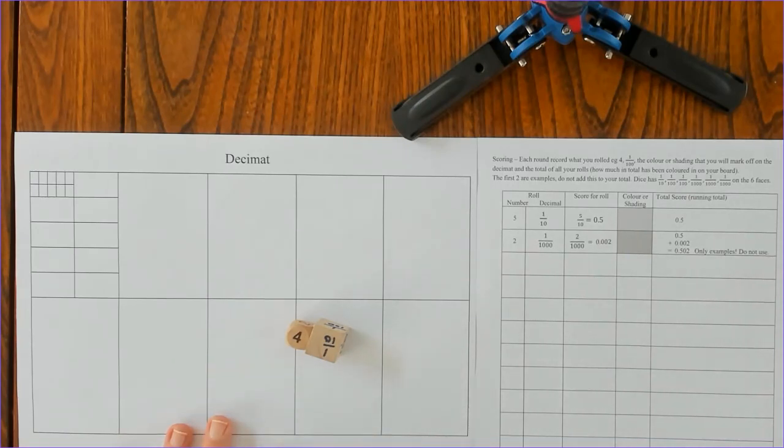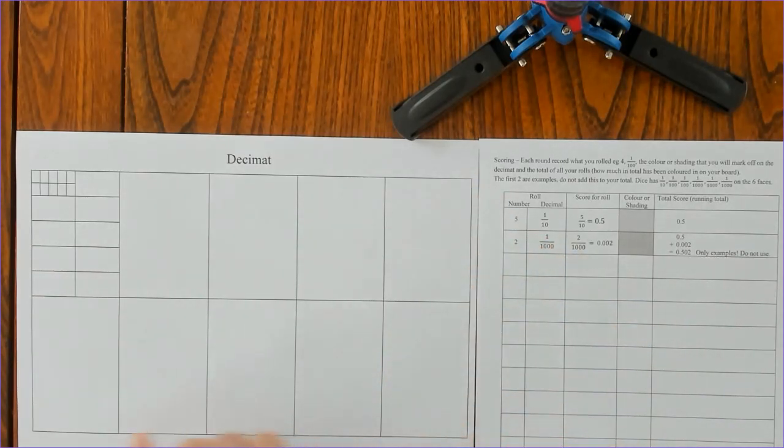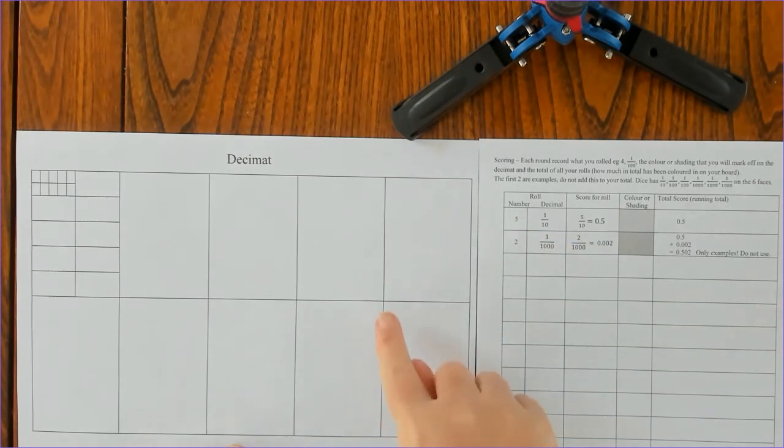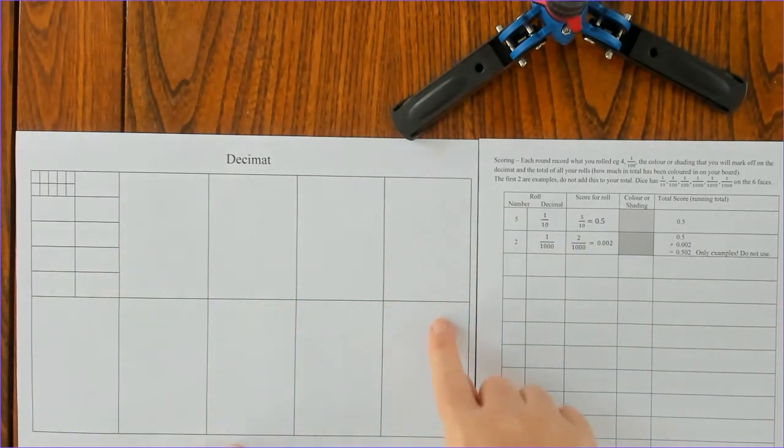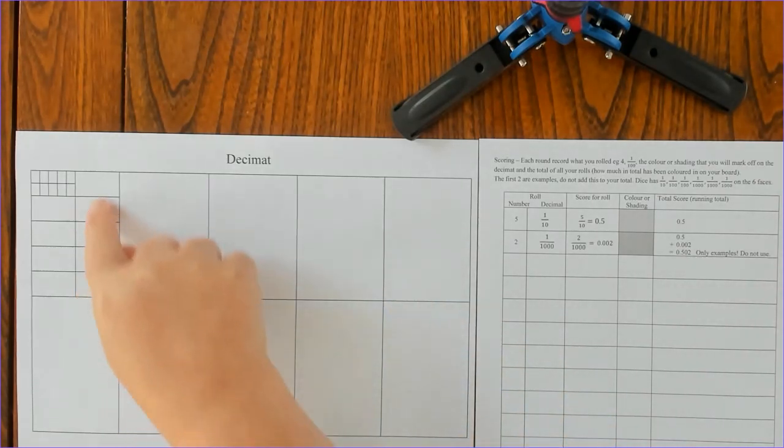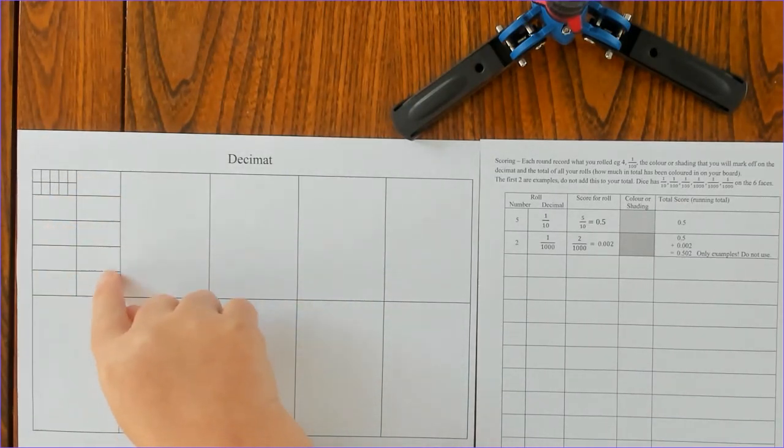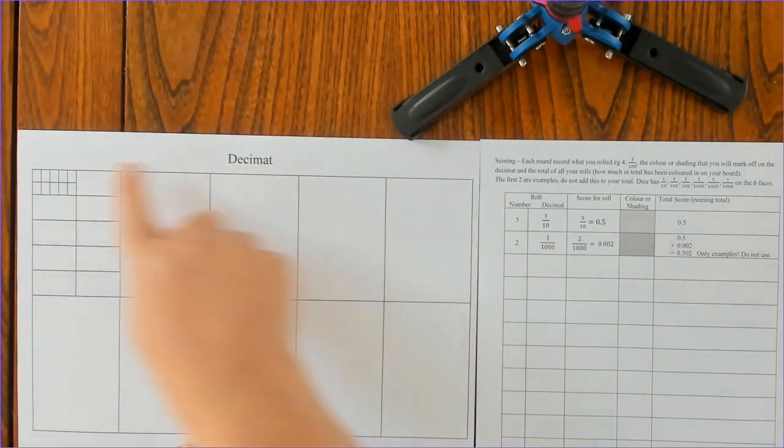So I'm going to simulate a player. This big thing, I have two, four, six, eight, ten divisions, so this is a tenth. Here again I've broken a tenth into ten pieces and that's a hundredth. Then I've broken one of those hundredths into ten pieces and that makes a thousandth.